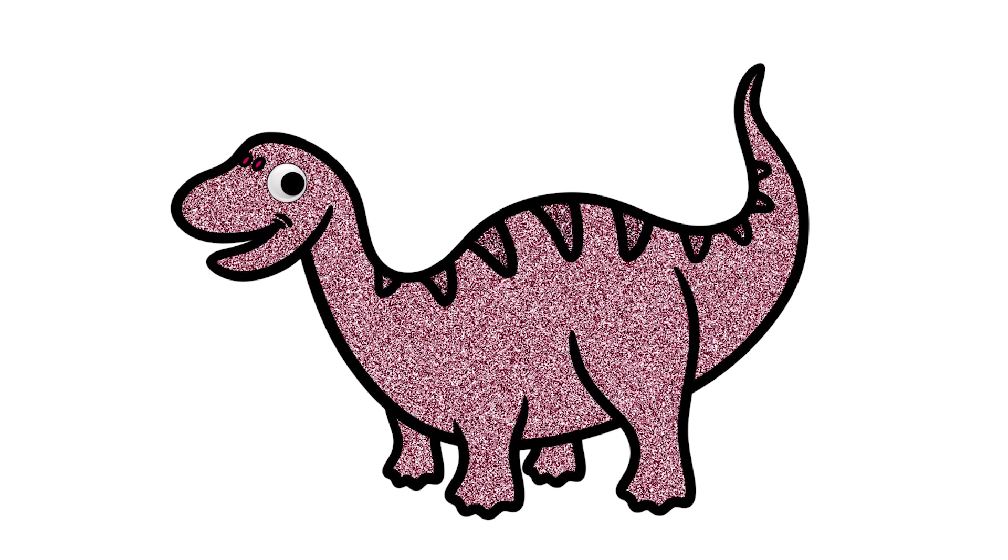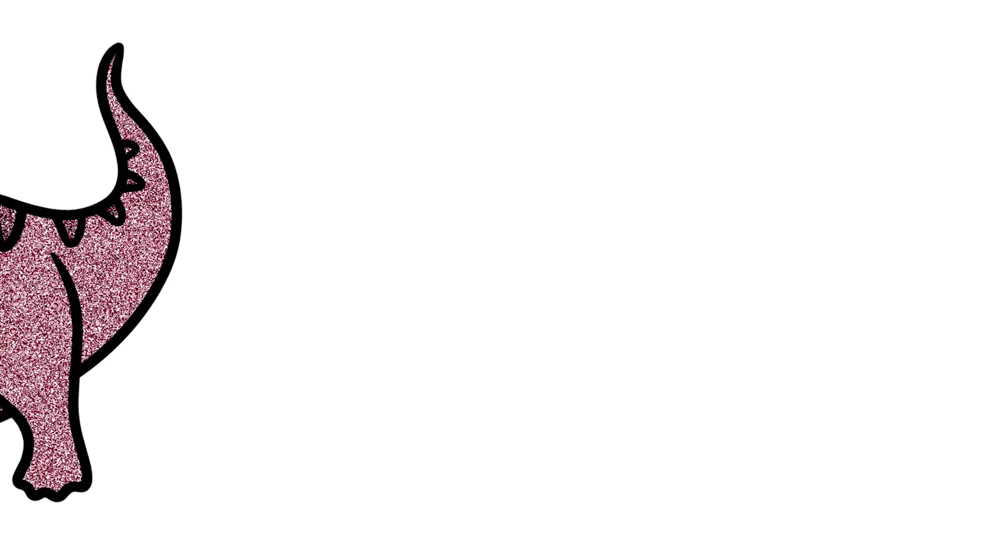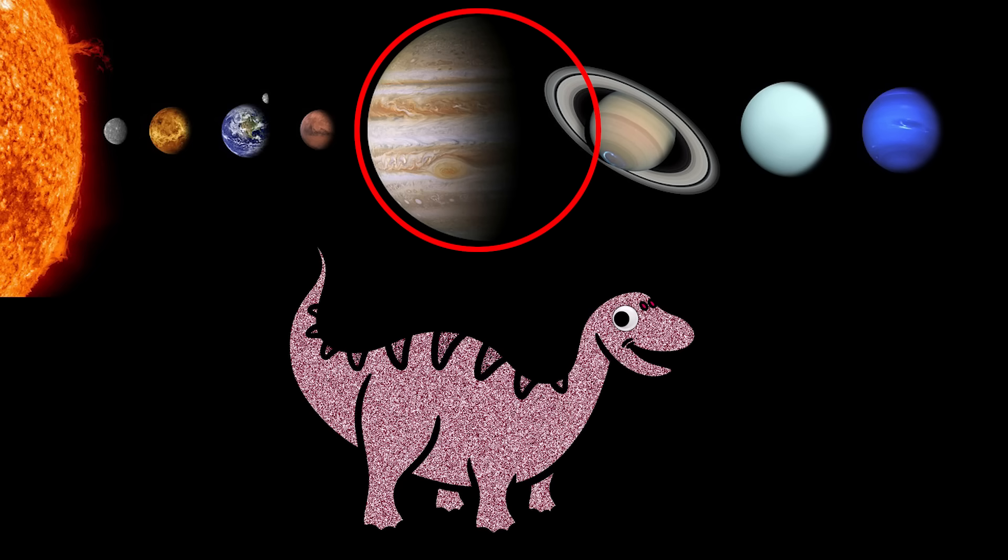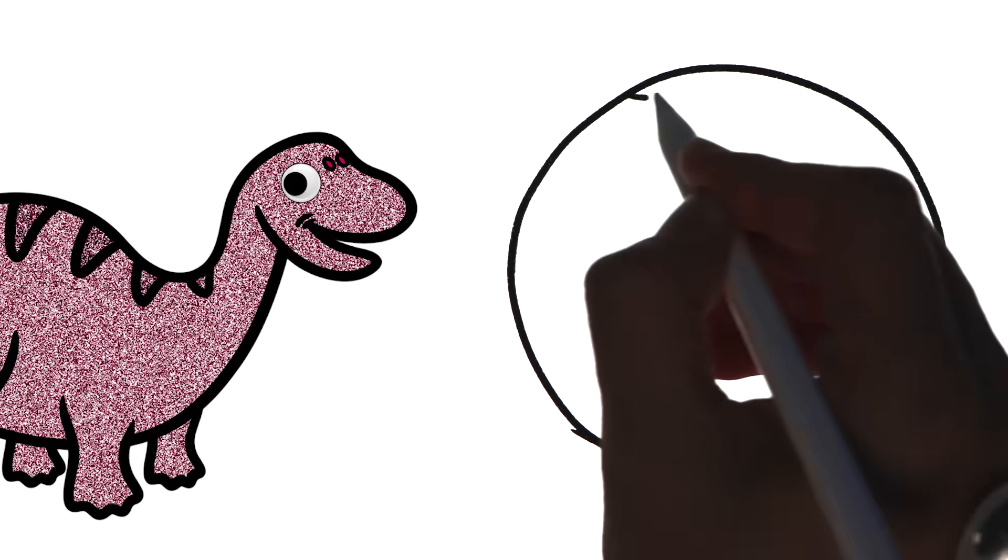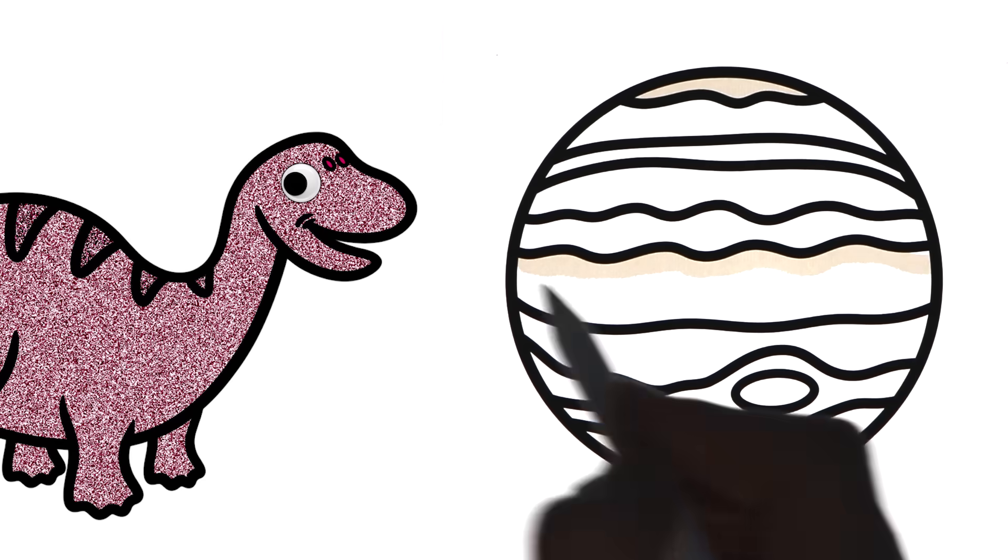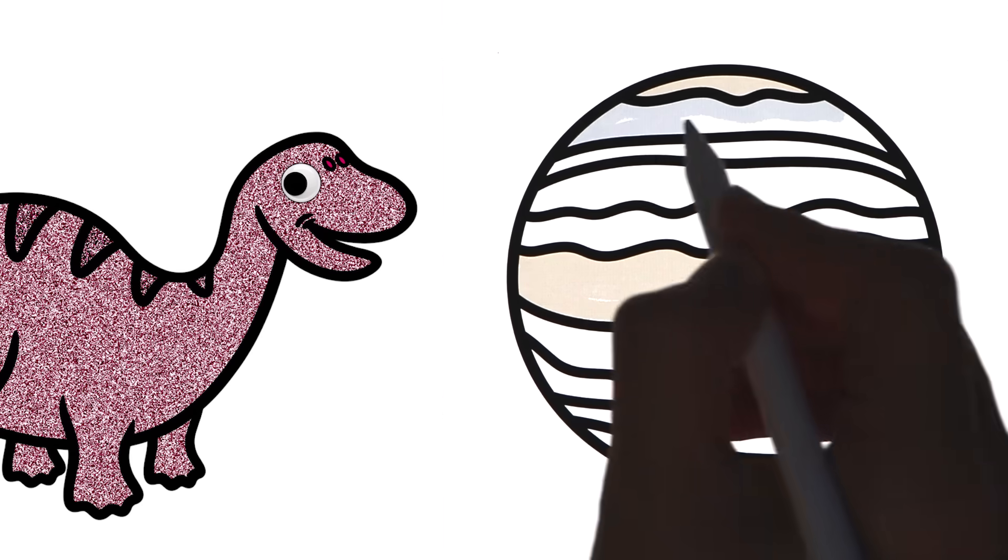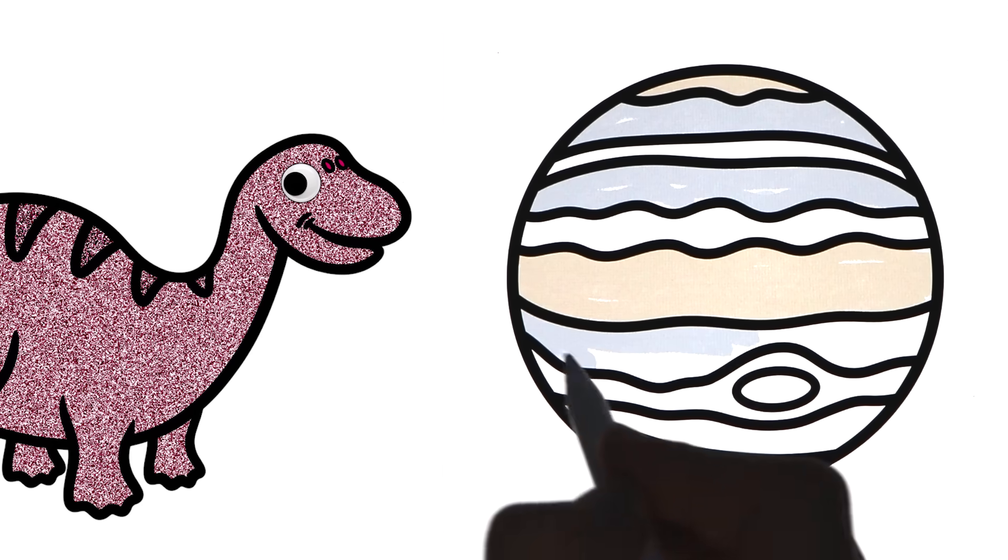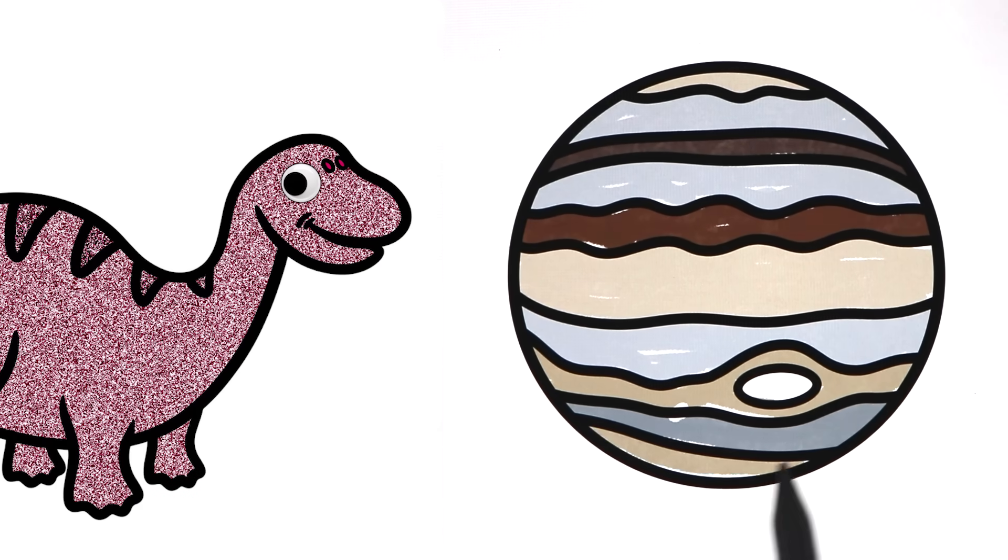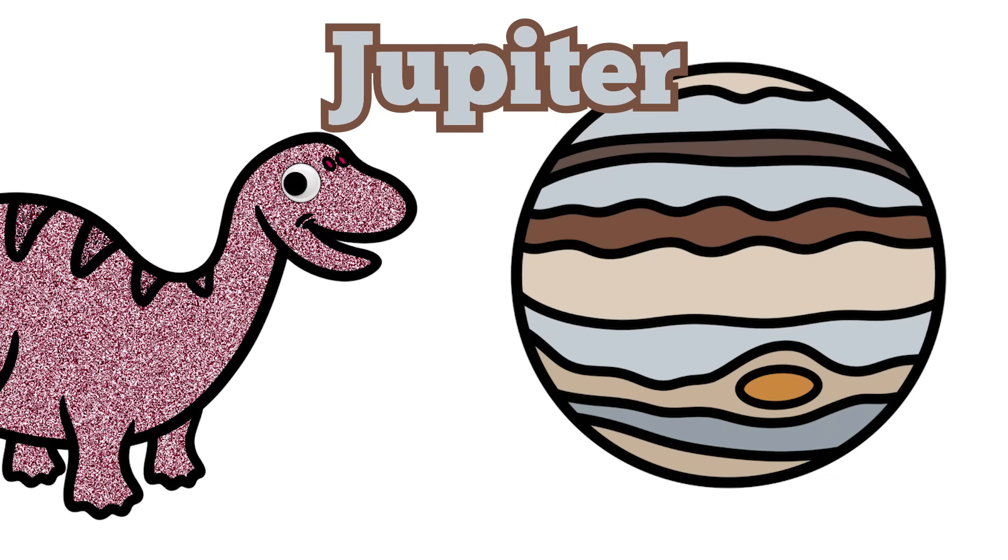Hello, my name is Apatosaurus. Hello, Apatosaurus. What's it like on Jupiter? Jupiter is the fifth planet from the sun. And as you can see, it's the biggest planet in our solar system. And it has big storm that looked like an orange dot called the Great Red Spot. Thank you, Apatosaurus. Bye. Bye, everyone.